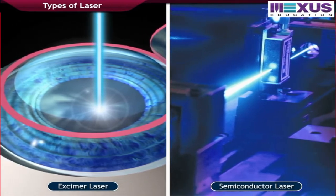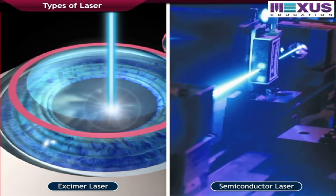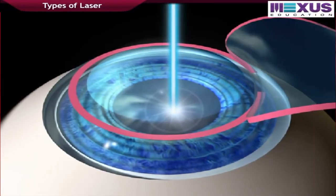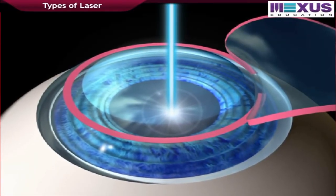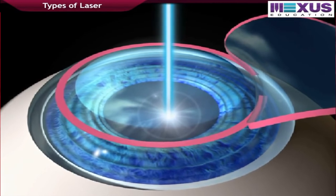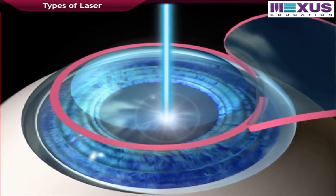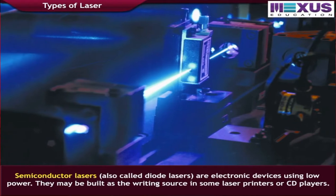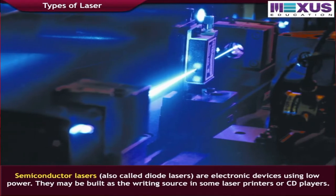In addition to these, there are excimer lasers and semiconductor lasers. Excimer lasers use reactive gases and inert gases as lasing medium; when electrically stimulated, a pseudo-molecule or dimer is produced, and when lased, the dimer produces light in the ultraviolet range. Semiconductor lasers are electronic devices using low power; they are used as writing sources in some laser printers or CD players.